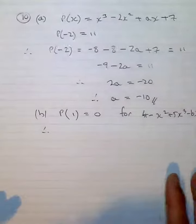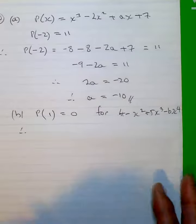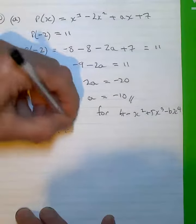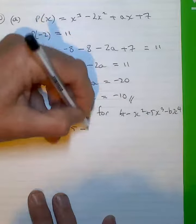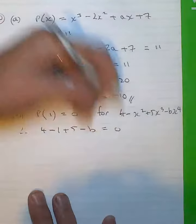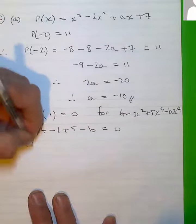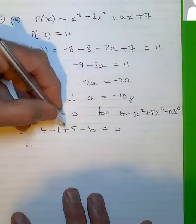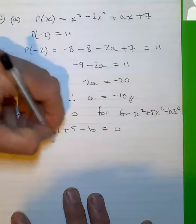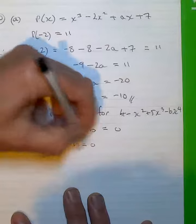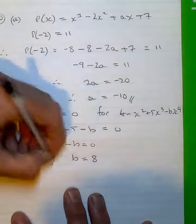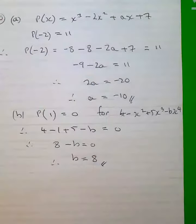In part b, I'm going to plug in 1. So 4 minus 1 plus 5 minus b is equal to 0, and therefore b will equal 8.